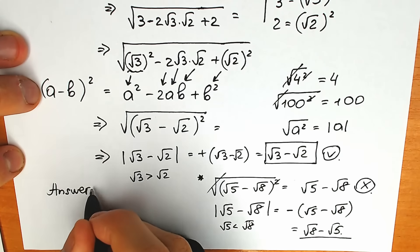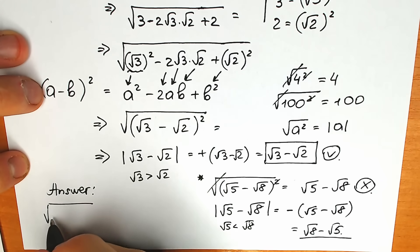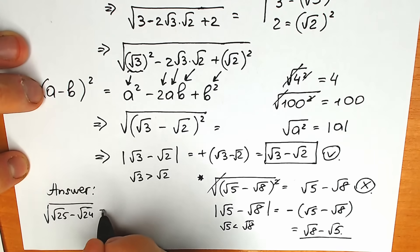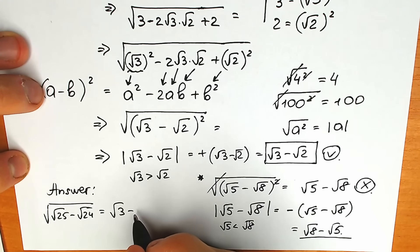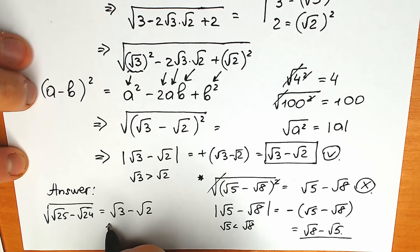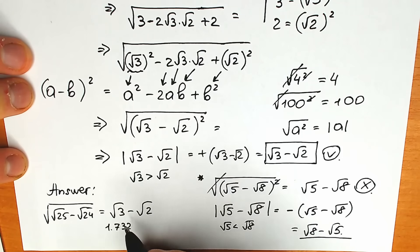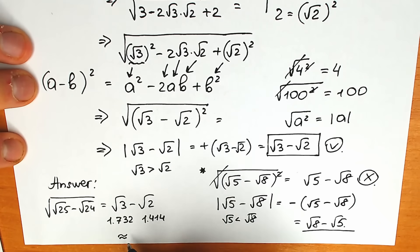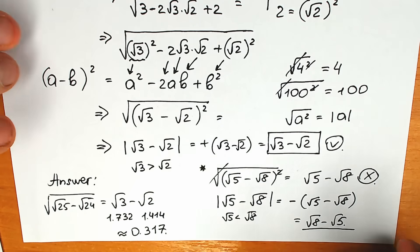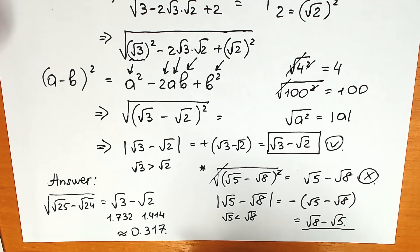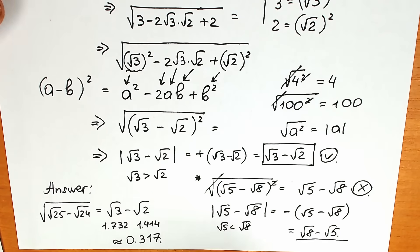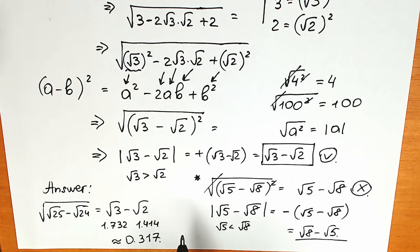So our final answer: square root of (square root of 25 minus square root of 24) equals square root of 3 minus square root of 2. As an approximation, square root of 3 is approximately 1.732 and square root of 2 is approximately 1.414, so the result is approximately 0.317. I really hope you understand this solution. Write your questions and notes in the comment section, thank you for your time, have a great day, see you in the next videos.